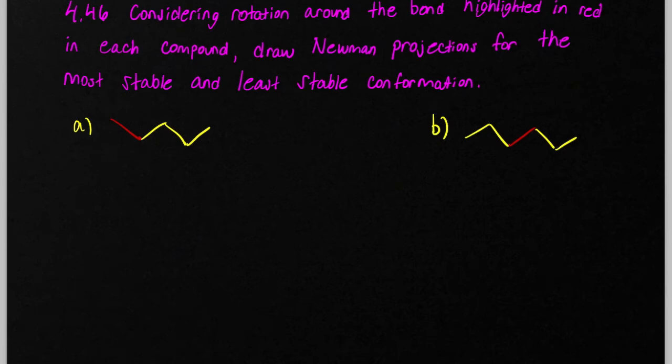Problem 46, we're asked to consider rotation around the bond highlighted in red in each of these compounds. We need to draw Newman projections and they want us to draw the most stable and least stable conformation.